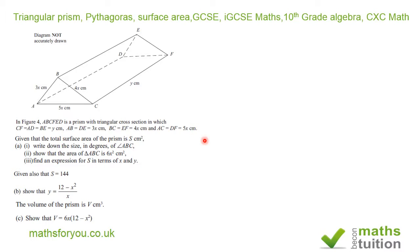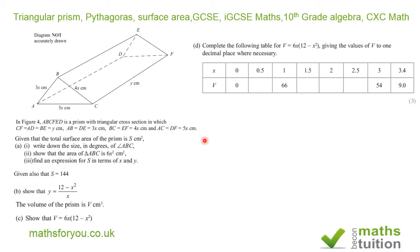The volume of the prism is V centimeters cubed, show that V is equal to 6X into 12 minus X squared. And then fill in those gaps in that table. And then it says, on the graph, plot the points from your complete table and join them to form a smooth curve. That should be easy enough, hopefully. And the last one, it says, using your graph, write down the maximum value of V. Now this is important here, using your graph.